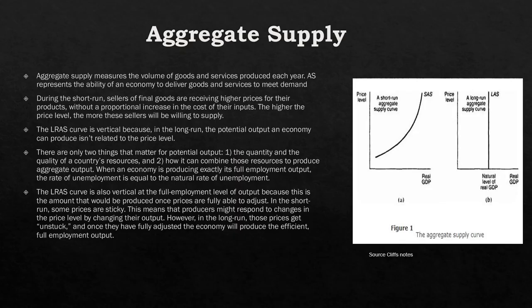Aggregate supply measures the volume of goods and services produced every year and represents the ability of an economy to deliver goods and services to meet demand. There are two graphs to remember. During the short run, sellers of goods are receiving higher prices for their products without a proportionate increase in the cost of their inputs, so the higher the price level, the more sellers will be willing to supply — giving you the curved short-run graph.